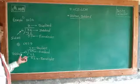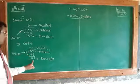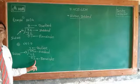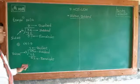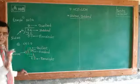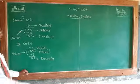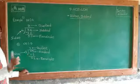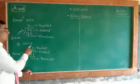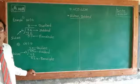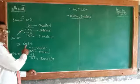In another example, when we divide 65 by 9, the remainder is not 0. The remainder is 2. Therefore, 9 is not a factor of 65. Also, 65 is not a multiple of 9. Therefore, 65 is not divisible by 9.